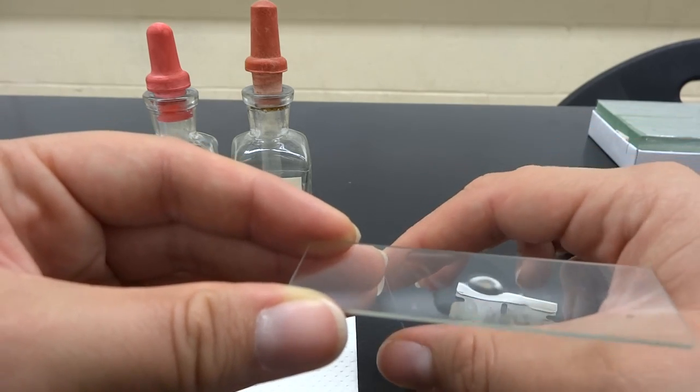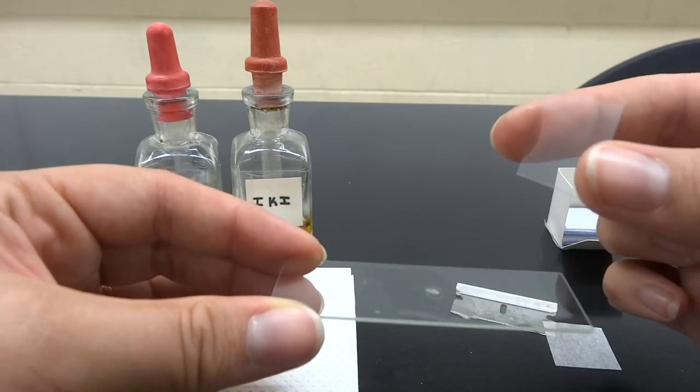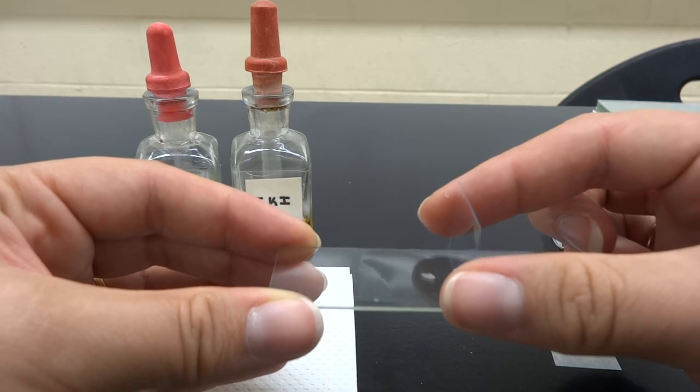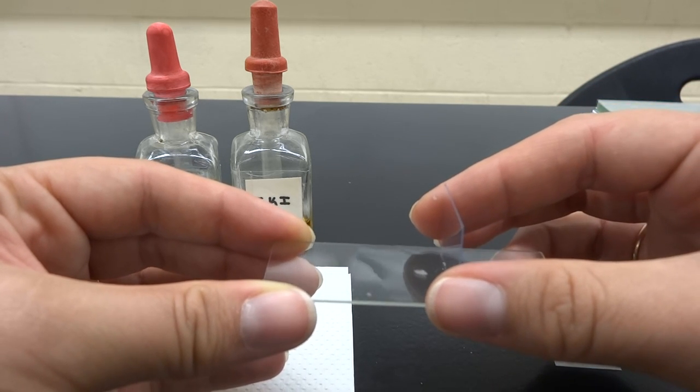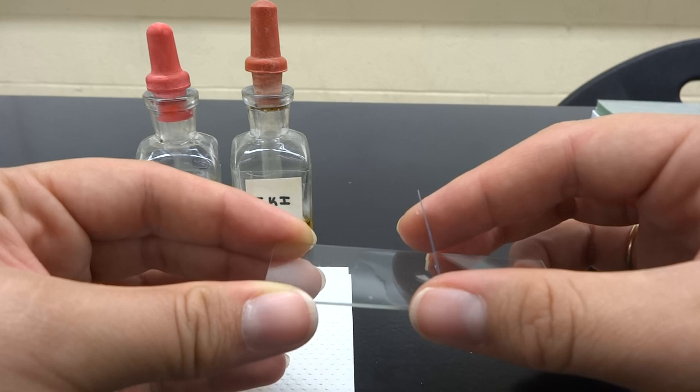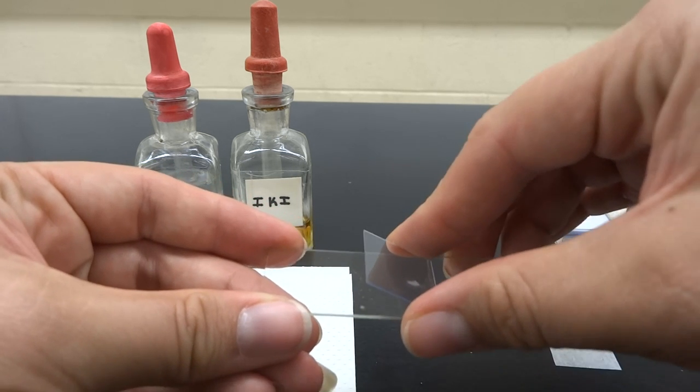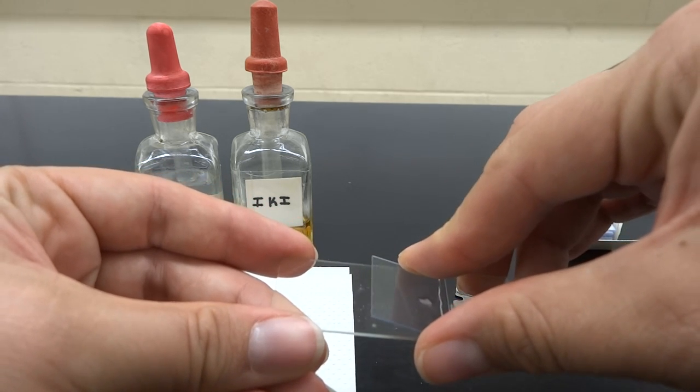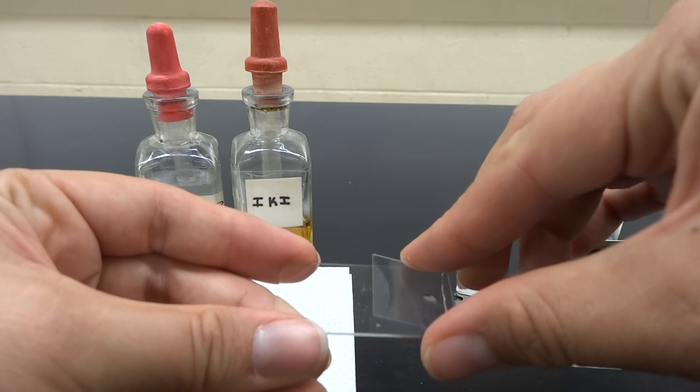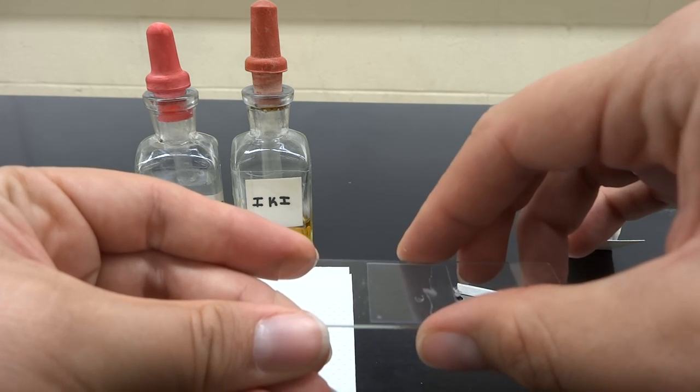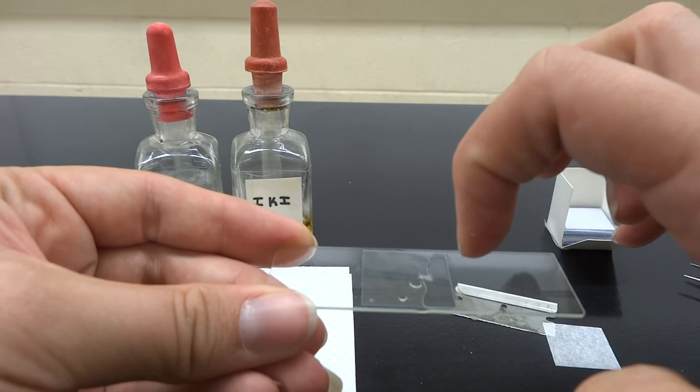So the way that you'll do this is to take the coverslip and line it up at a 90 degree angle on the slide. And then you're going to close it, kind of like you're closing a book in the slowest possible way you can. And as you do that, you will get as close to the slide as you can and you will drop it.